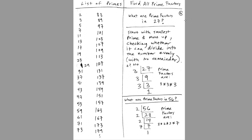On page 6 there's a list of primes all the way to 179. As an example, let's find all the prime factors for 27. We're always going to start with the smallest prime — that means starting with 2 — then move up, checking whether it can divide into the number evenly, meaning with no remainder. We'll always use this list when trying to find all the prime factors.